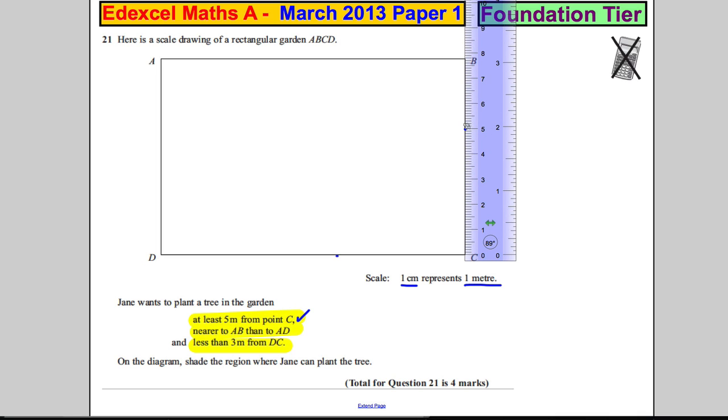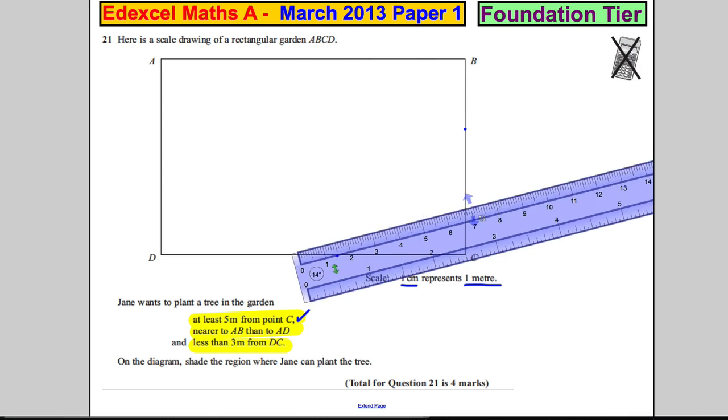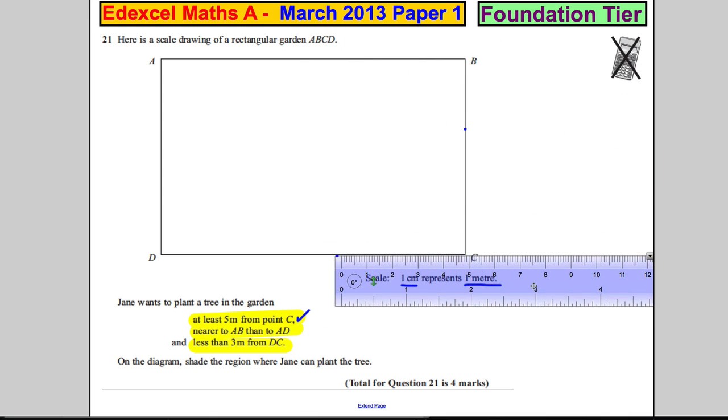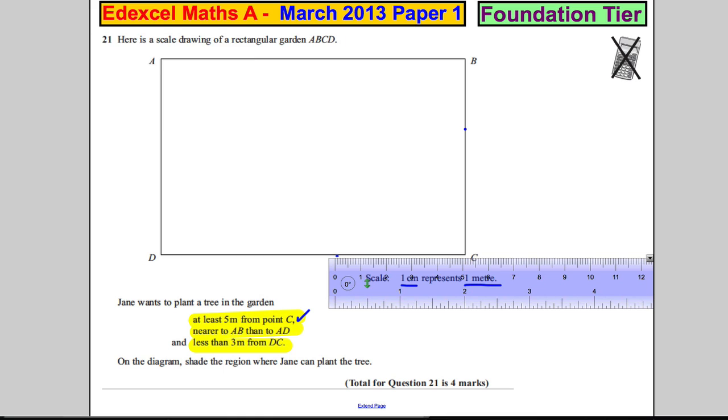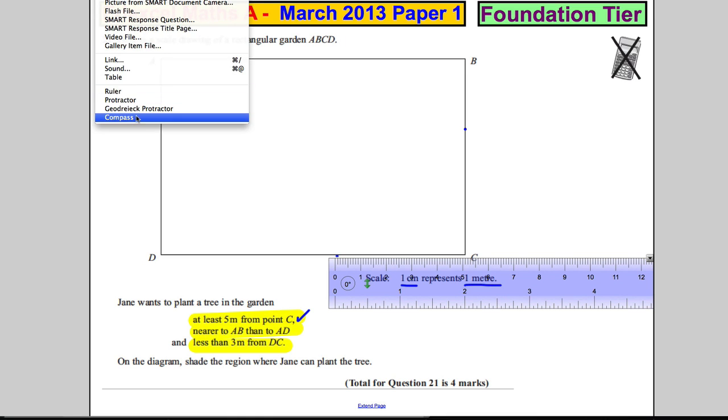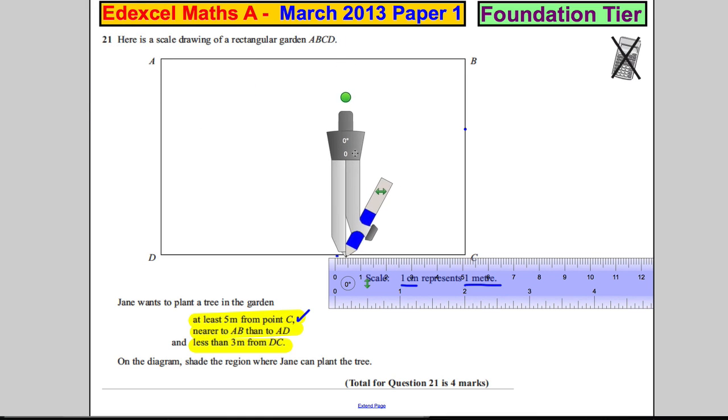Now you want all the points that are five centimeters away, so you're going to actually have to get out your pair of compasses for this one. So insert, take your compass out. You want to measure five centimeters, which is the equivalent of five meters. You would put this on the corner of C and you want to swivel it around.